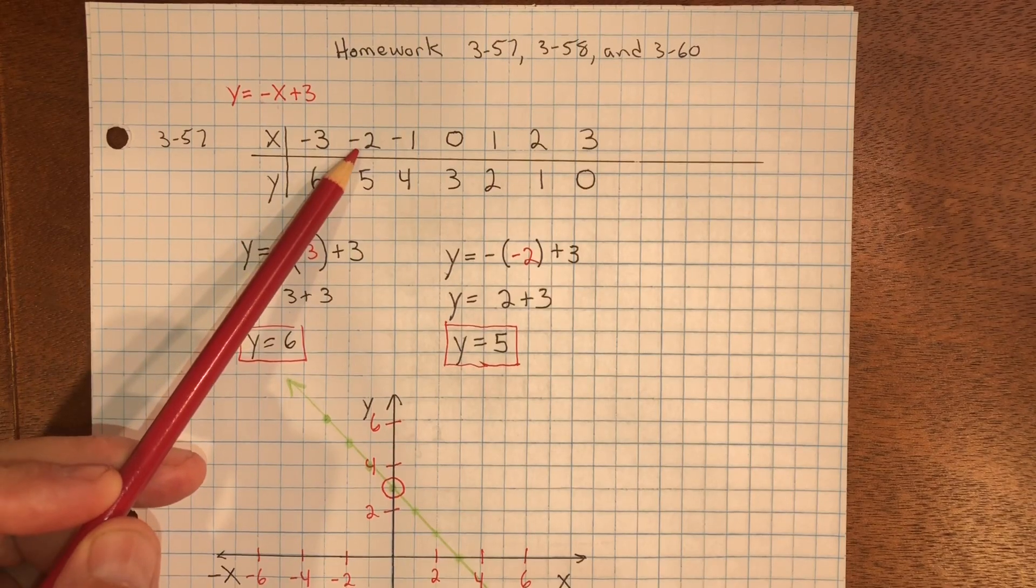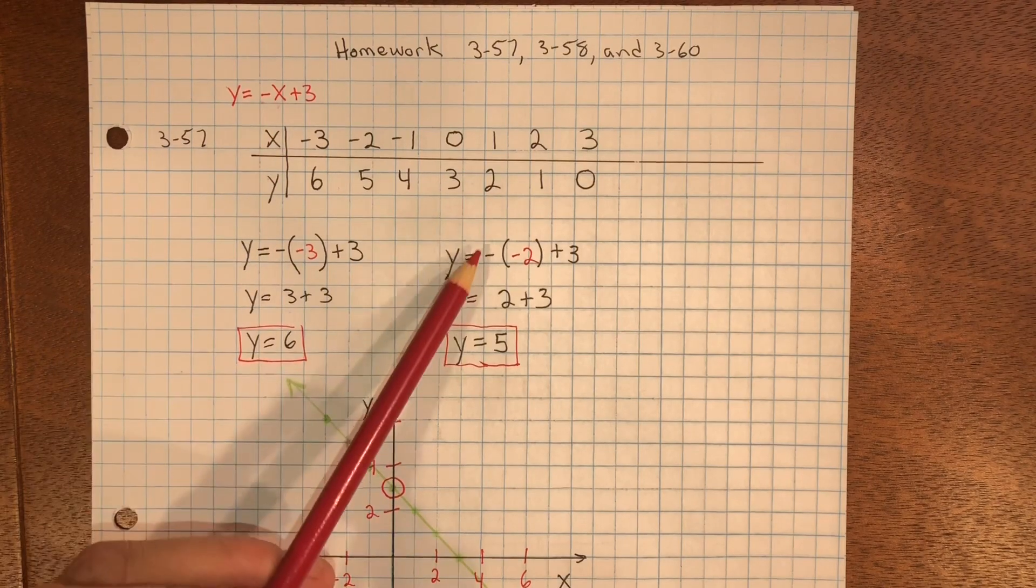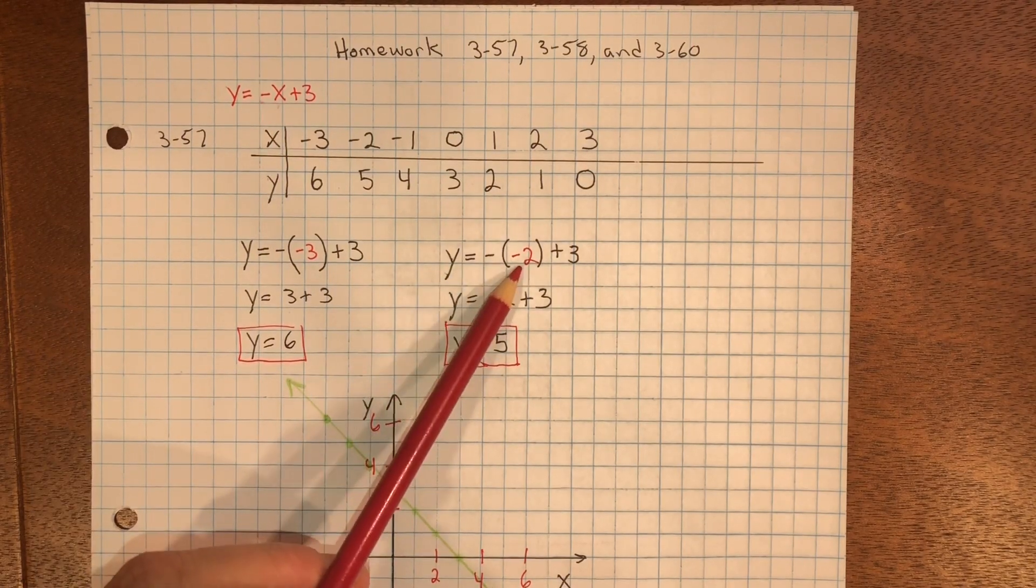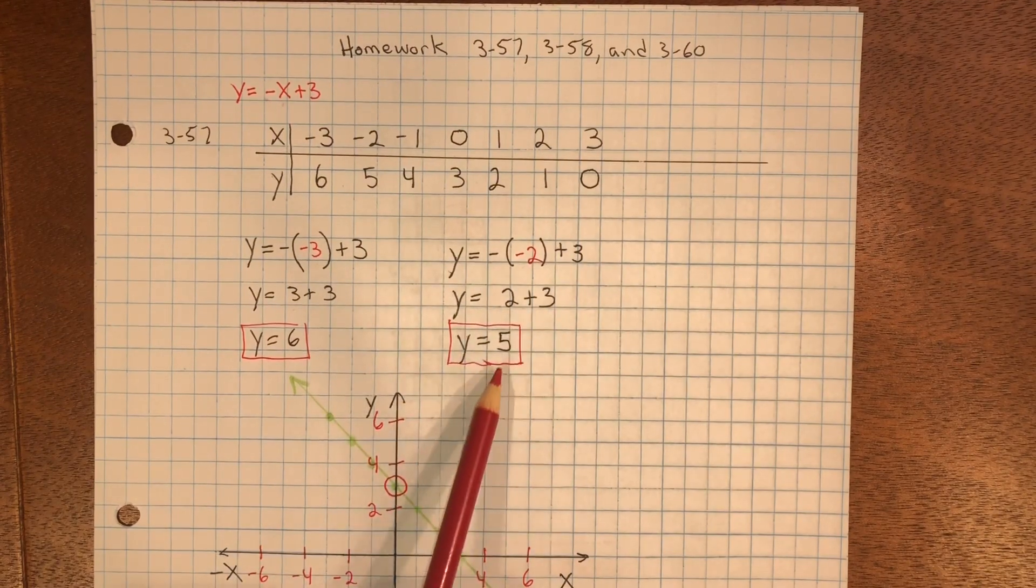For negative 2, the opposite of negative 2 is a positive 2. 2 plus 3 is 5.